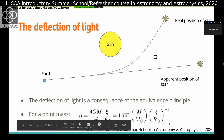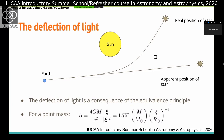You can calculate this angle by plugging in the gravitational constant, the speed of light, and the mass of the sun, using the radius of the sun as the impact parameter to see the deflection for a light ray grazing the solar surface. It turns out to be 1.75 arcseconds. This prediction is twice what you expect for the Newtonian case, which is why it could be used to test Newton's theory of gravity against Einstein's general relativity.